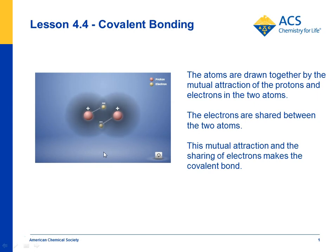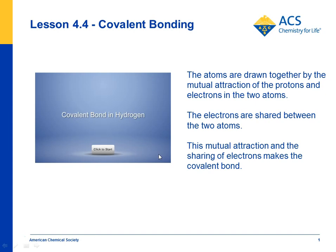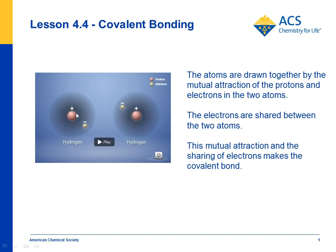We're going to play this animation twice, just so that we understand what's happening. When you saw the double-headed arrow, that indicates that there's an attraction between the proton from this hydrogen atom and the electron from this one.